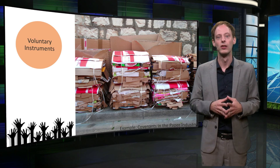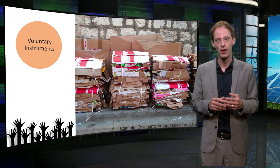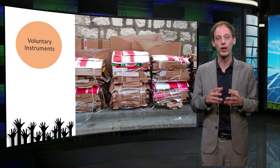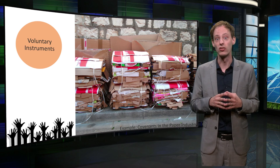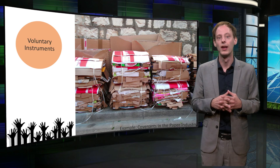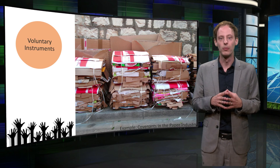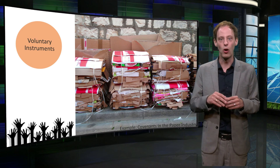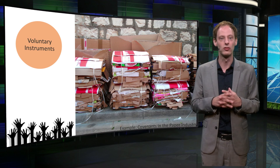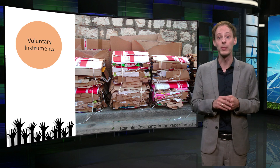Lastly, voluntary instruments are a means of self-regulation. Industries or companies that are not regulated yet can set themselves targets and guidelines for improved energy efficiency performance. This works well for sectors in which energy efficiency improvements do pay off, but only if all the competitors do it as well. An example is the paper industry, where they have their own covenants.